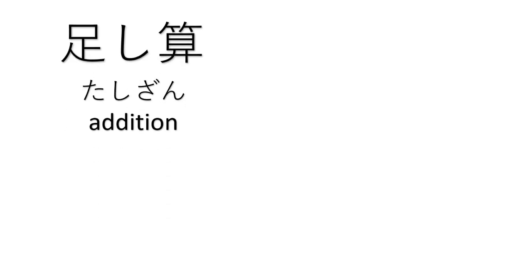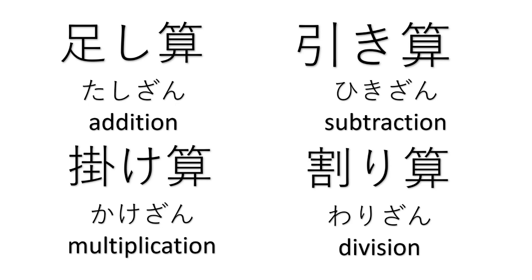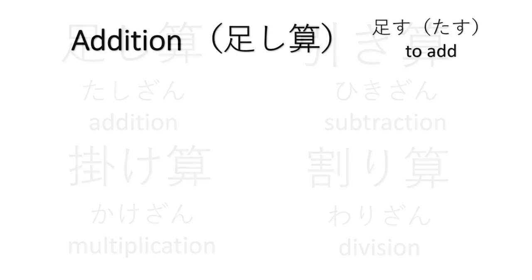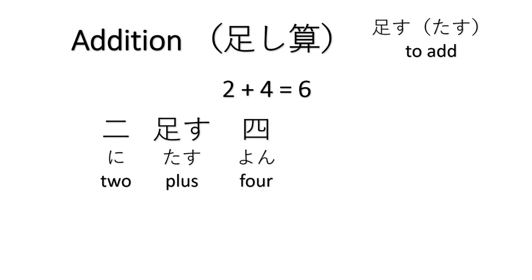Here we have the four kinds of operation in arithmetic: addition, tashizan; subtraction, hikizan; multiplication, kakezan; and division, warizan. Let's start with addition. We use tasu to mean 'to add.' For example, two plus four equals six. Ni tasu yon wa roku desu. We add desu for polite speech. Ni tasu yon wa roku desu - two plus four equals six.